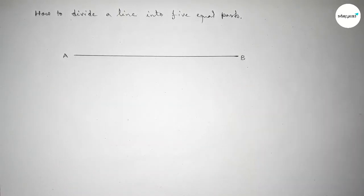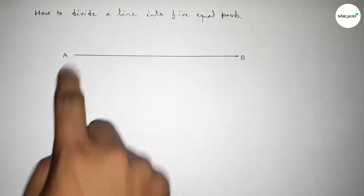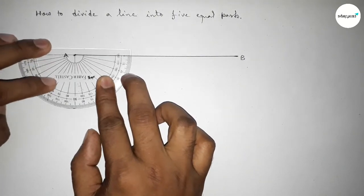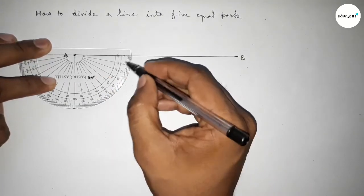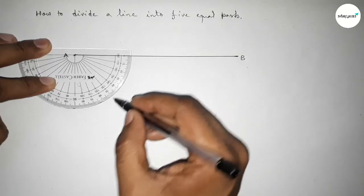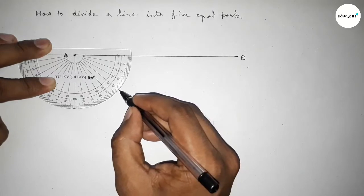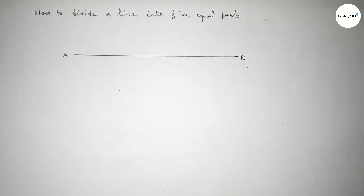Next, we have to take an acute angle on the point A, so putting the protractor on the point A and taking an acute angle. So taking here 40 degree angle—you can take 50 degree, 30 degree also, okay.